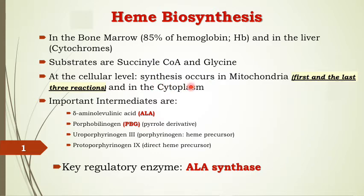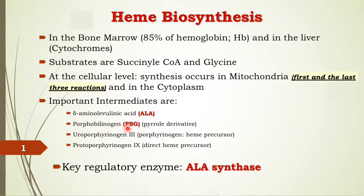You have to study the names of all enzymes because there are diseases in heme biosynthesis, and those clinical applications are very important. The intermediates arising during biosynthesis of heme are: delta-aminolevulinic acid (ALA), porphobilinogen (PBG), uroporphyrinogen III (indirect heme precursor), and protoporphyrinogen IX (direct heme precursor).